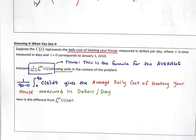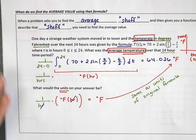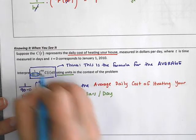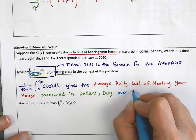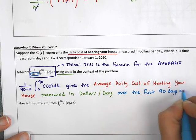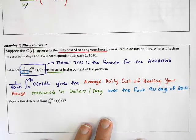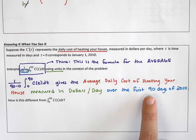We also have to be specific about the interval. This is the average daily cost of heating your house, measured in dollars per day, over the interval from 0 to 90. Since T is measured in days after January 1, 2010, we say: over the first 90 days of 2010. There are three components to include: the average of what you're averaging, the units, and the time interval.